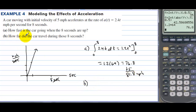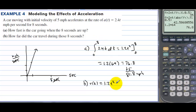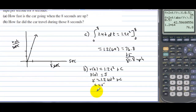For part B — how far did the car travel during those 8 seconds? The velocity function is V(t) = 1.2t squared plus c. Using the initial condition V(0) = 5, we get 5 = 1.2(0) squared + c, so c = 5. Therefore V(t) = 1.2t squared + 5.